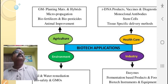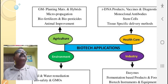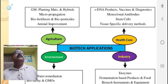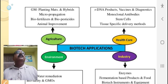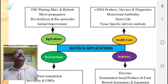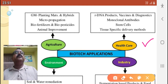In healthcare, biotechnology has wide applicability. Today we are looking for a vaccine which can be used against the coronavirus to save the world from the COVID-19 pandemic. The products of biotechnology used in the healthcare system are recombinant DNA products, vaccines, diagnostics, monoclonal antibodies, stem cells, tissue-specific delivery methods, drug designing, and many other things used to improve the healthcare system of the population.